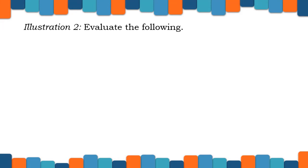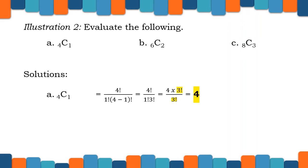Let us have Illustration 2. We have: A) 4C1, B) 6C2, and C) 8C3. For A, 4C1 = 4 factorial over (1 factorial times 3 factorial). Canceling 3 factorial from numerator and denominator, we get 4. For B, 6C2 = 6 factorial over (2 factorial times 4 factorial). We cancel 4 factorial from numerator and denominator.